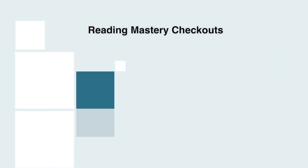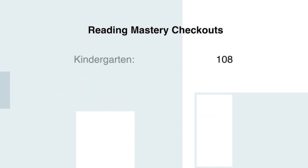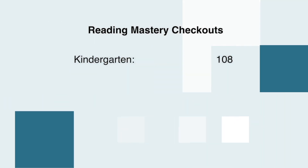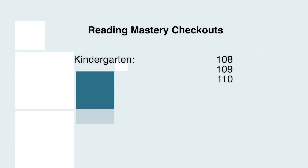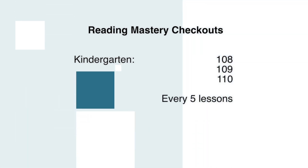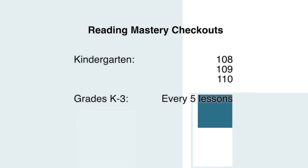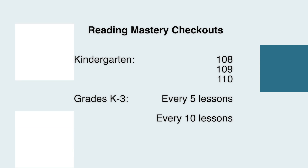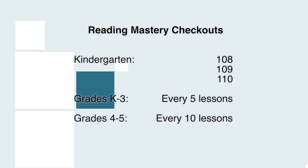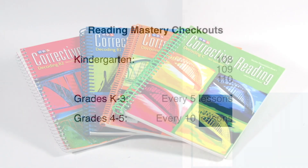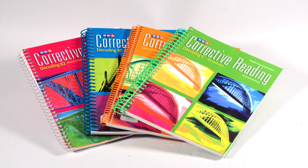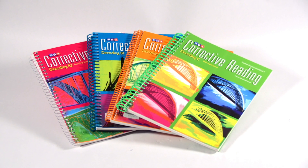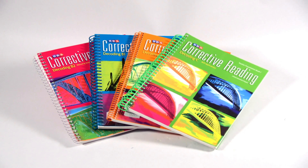In Reading Mastery, checkouts begin on Lesson 108 of the Kindergarten level of the program. Students are given checkouts on Lessons 109 and 110, then every 5 lessons through the Grade 3 level of the program. Checkouts appear every 10 lessons in the upper two levels, Grade 4 and Grade 5. In contrast, the Corrective Reading Decoding program contains daily checkouts in all levels of the program to provide a close check on remedial readers' accuracy and fluency.